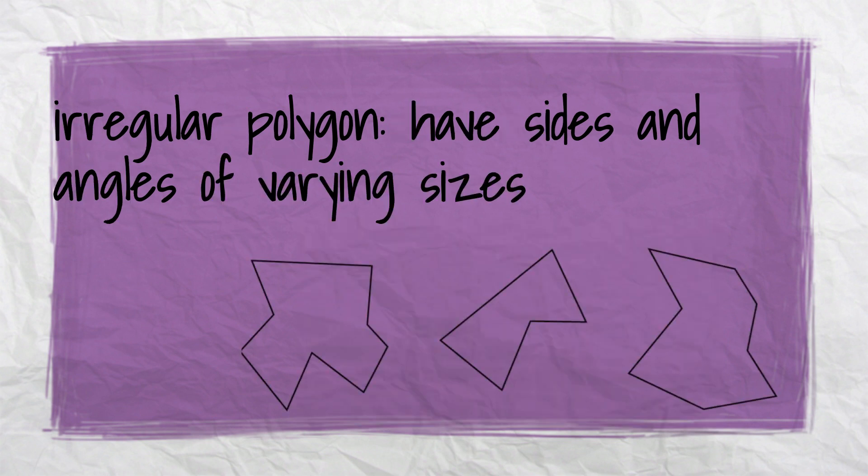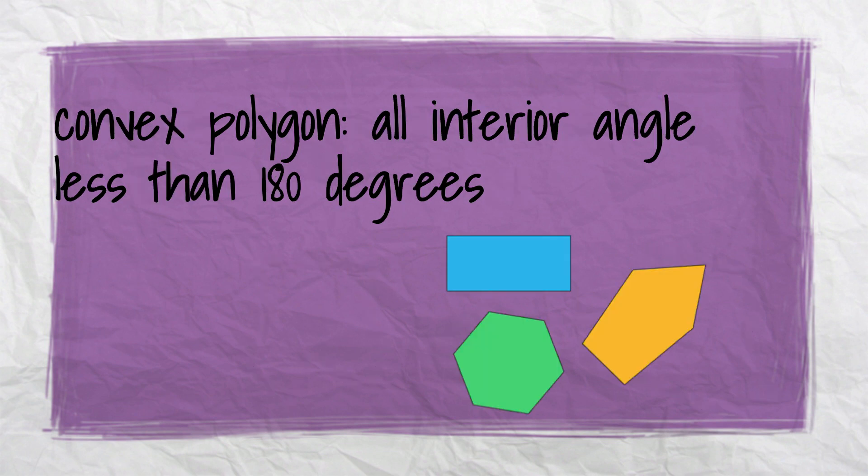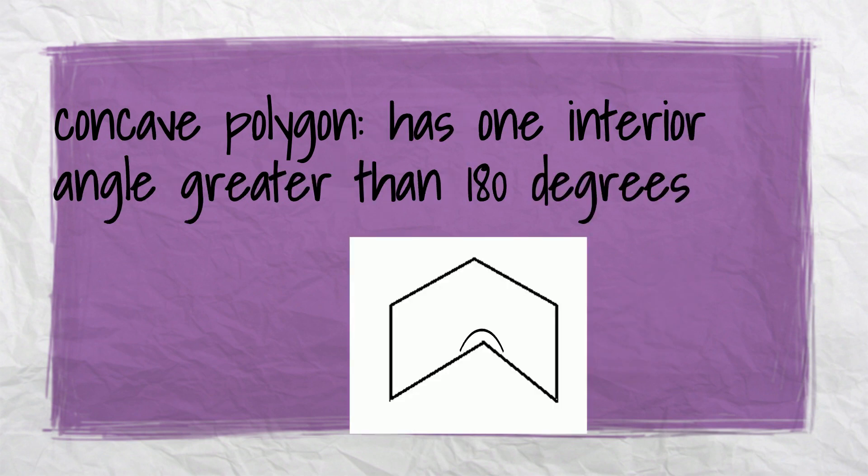In irregular polygons, the sides and angles are varying sizes — they're not the same. In convex polygons, all interior angles are less than 180 degrees.